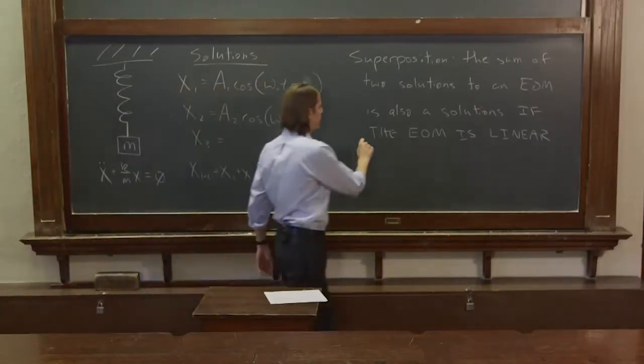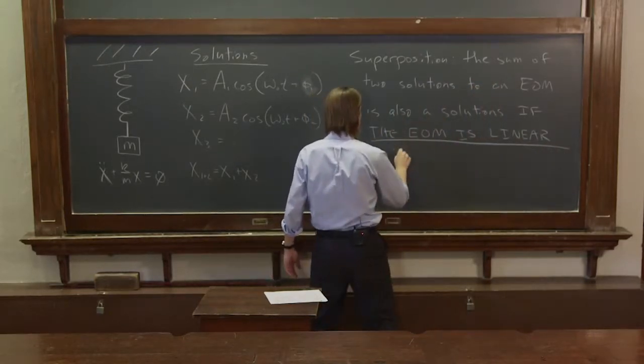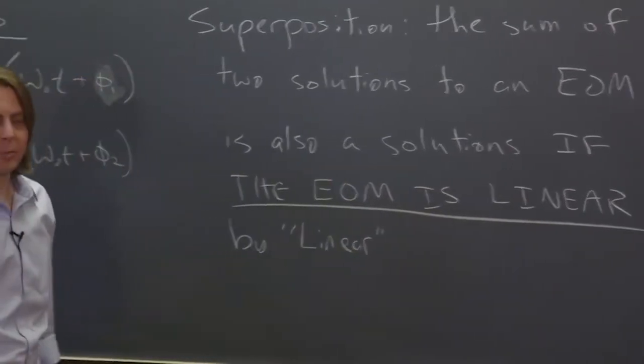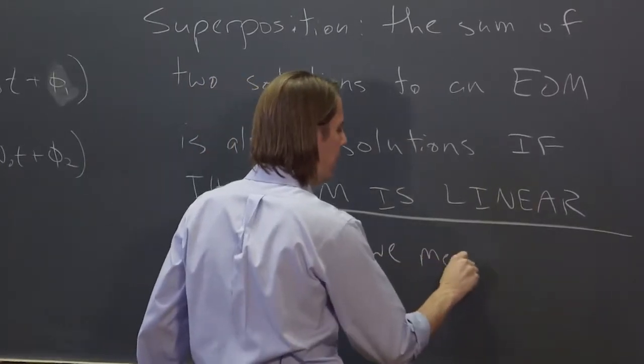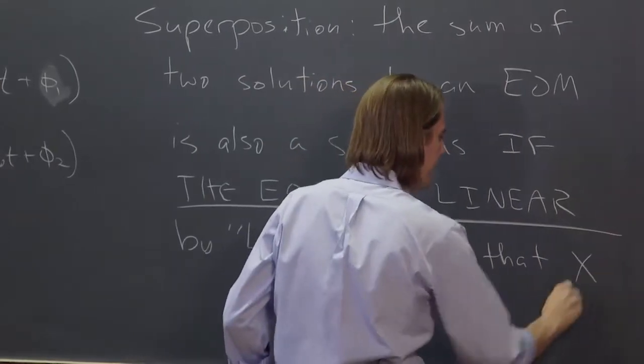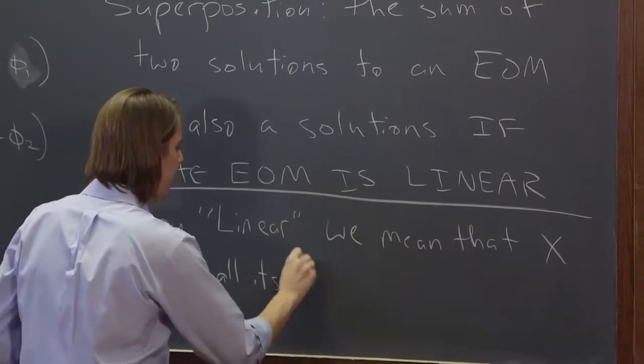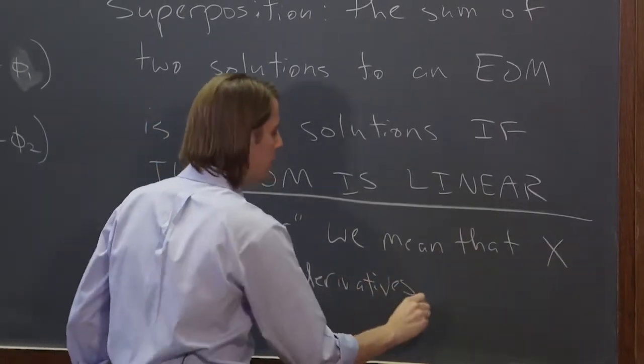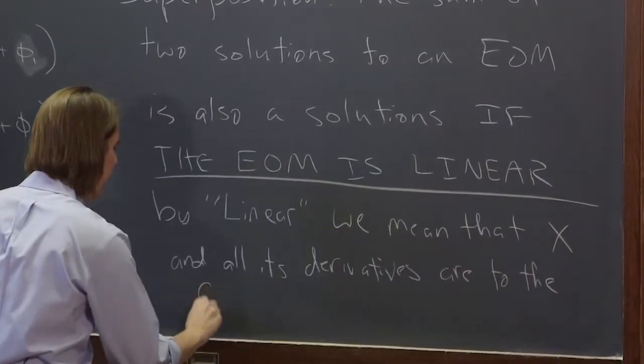If the equation of motion is linear, and let's be clear what we mean by linear, we do not mean y equals mx plus b. We mean, by we, I mean the establishment, we mean that x and all its derivatives are to the first power. They are linear.